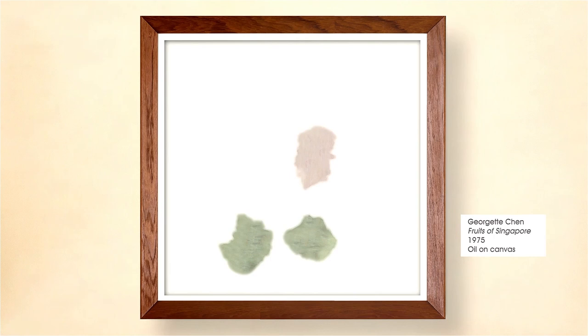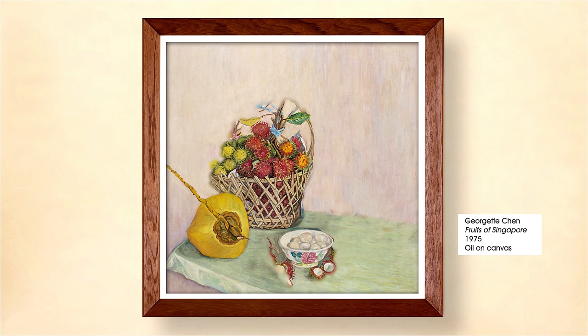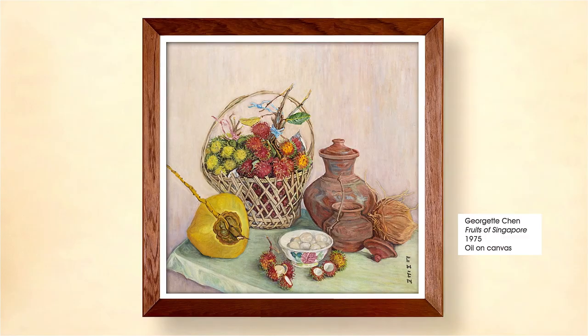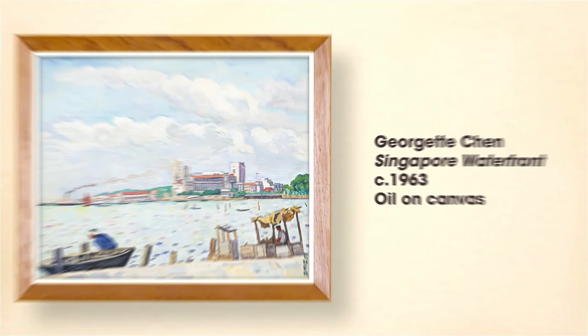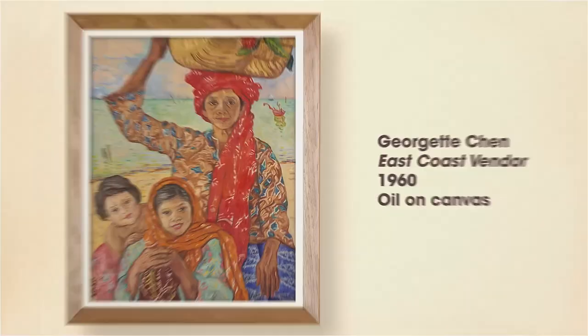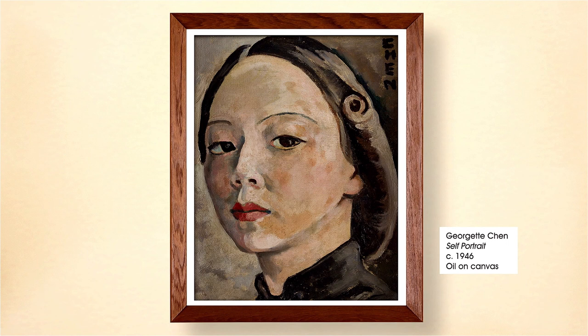Have you wondered how artists choose to arrange the different elements in their paintings? Do they always paint scenes exactly as they appear in real life? In this video, we learn about composition by looking closely at two paintings by Singaporean artist Georgette Chen: Singapore Waterfront and East Coast Vendor. Widely recognized for her achievements and contributions as an artist and educator, Chen is a key figure in the development of modern art in Singapore.